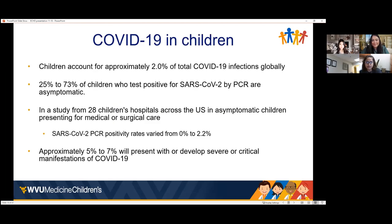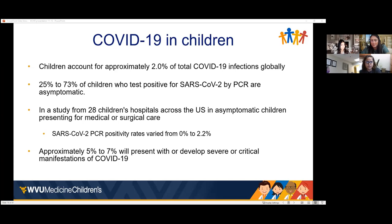A brief review of COVID-19 illness in children: globally, children account for approximately 2% of COVID-19 infections. There is a wide range of asymptomatic children — 25 to 73% of children who test positive for SARS-CoV-2 by PCR are asymptomatic. A review from 28 children's hospitals across the US found 0 to 2.2% of admitted asymptomatic children were positive. About 5 to 7% will develop severe or critical manifestations of COVID-19.